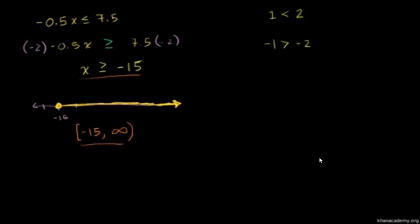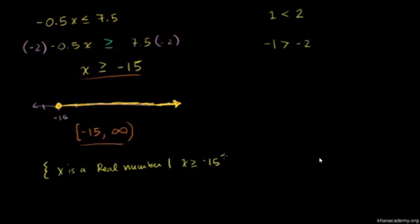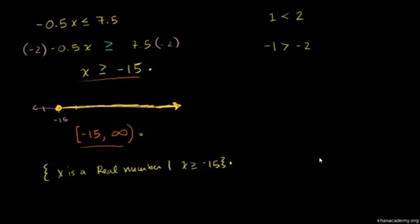You might also see set notation where the solution is written as: the set of all real numbers x such that x is greater than or equal to negative 15. The curly brackets mean the set of all numbers, and that vertical line means 'such that.' The number line graph, the interval notation, and the set builder notation are all equivalent.